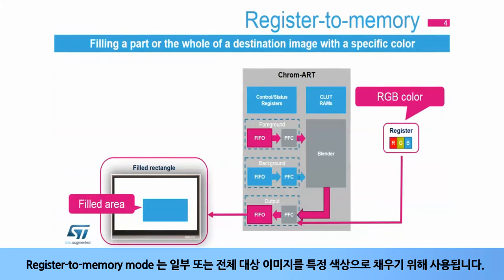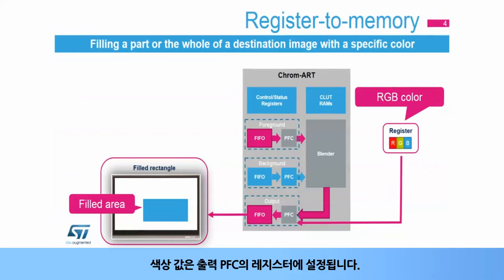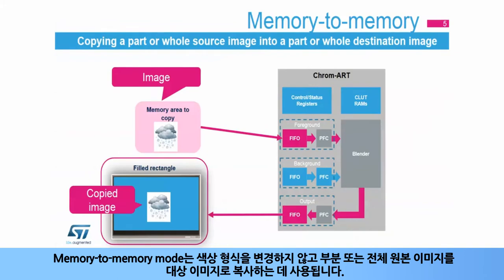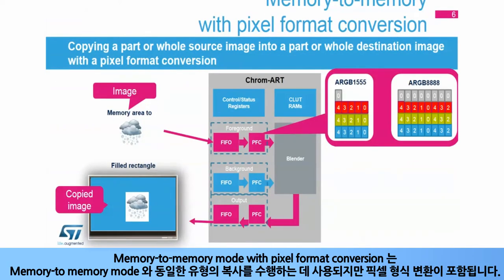Register to memory mode is used to fill a part or whole destination image with a specific color. The color value is set in a register of the output PFC. Memory to memory mode is used to copy a part or whole source image into a part or whole destination image without changing the color format. Memory to memory mode with pixel format conversion is used to do the same type of copy but with a pixel format conversion.